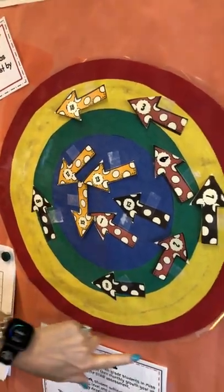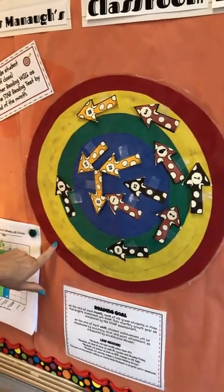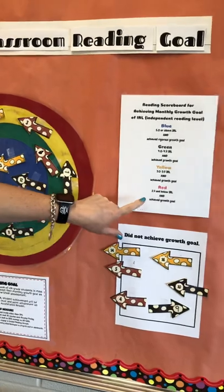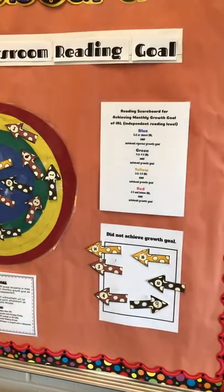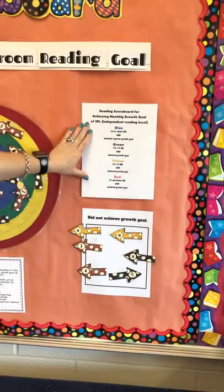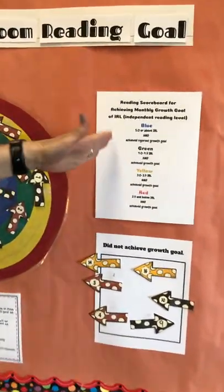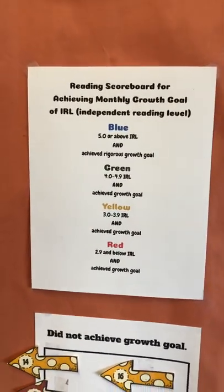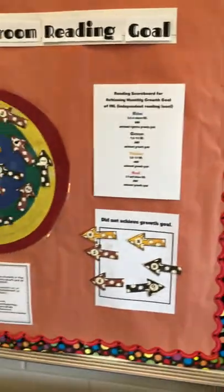As of right now I don't have anybody in red, but if I did, it would mean they met their growth goal but are significantly below grade level — which is 2.9 and below in fourth grade. Each grade level already has one of these made so that we all have the same, and Erin is going to be putting all of those together.